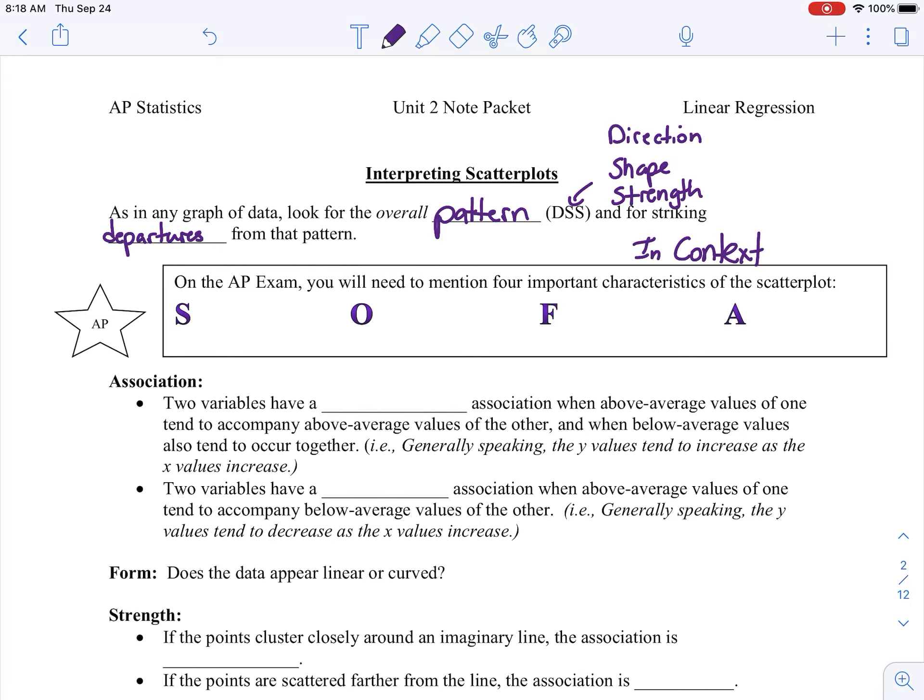So we're looking for strength, moderate, or weak. O is going to be our outliers. I think down below we have a better description of it, but we'll write it right in here. Points not fitting pattern.